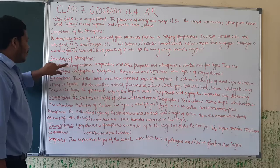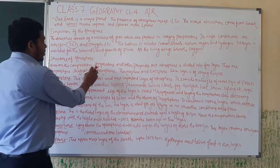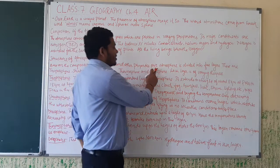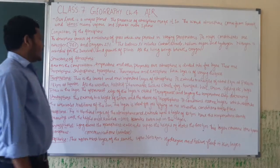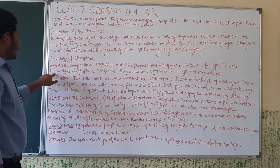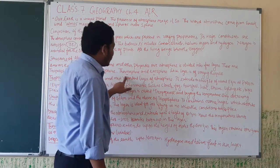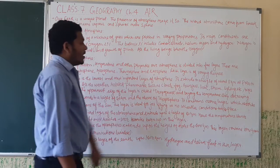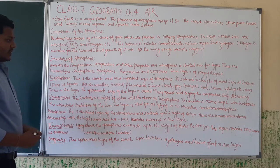Now let us look at the structure of the atmosphere. Based on composition, temperature, and other properties, our atmosphere is divided into five layers: troposphere, stratosphere, mesosphere, thermosphere, and exosphere. Each layer has its own thickness.